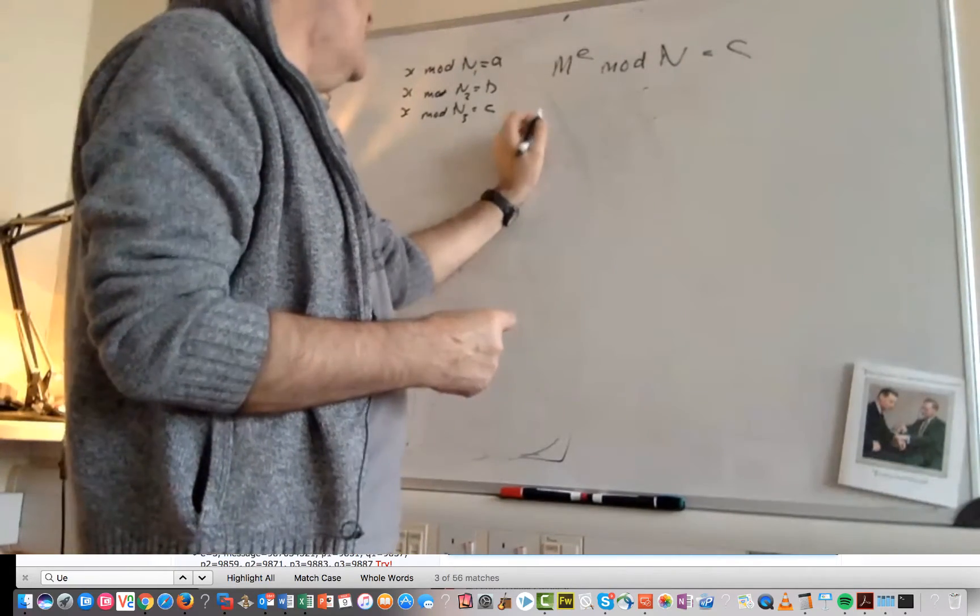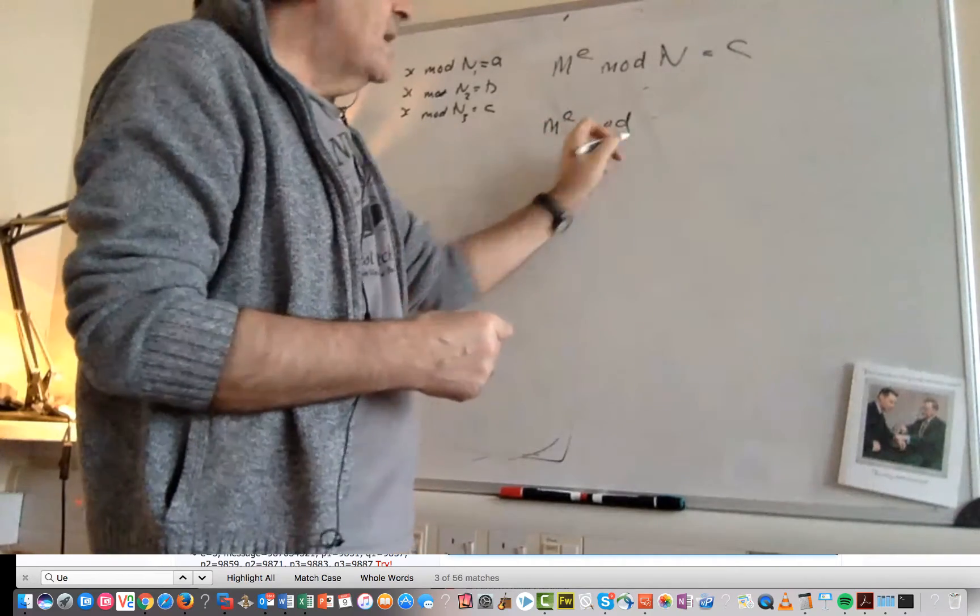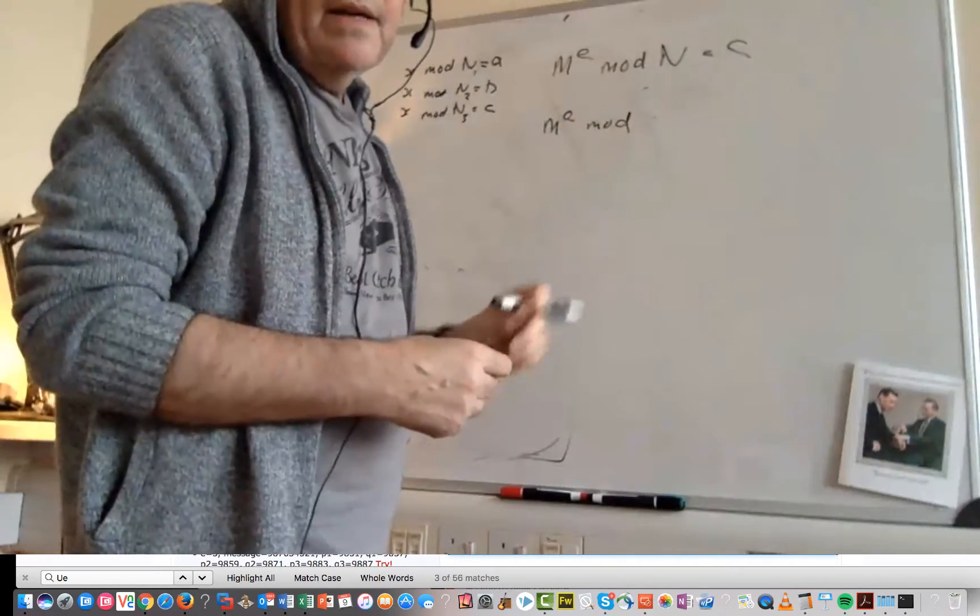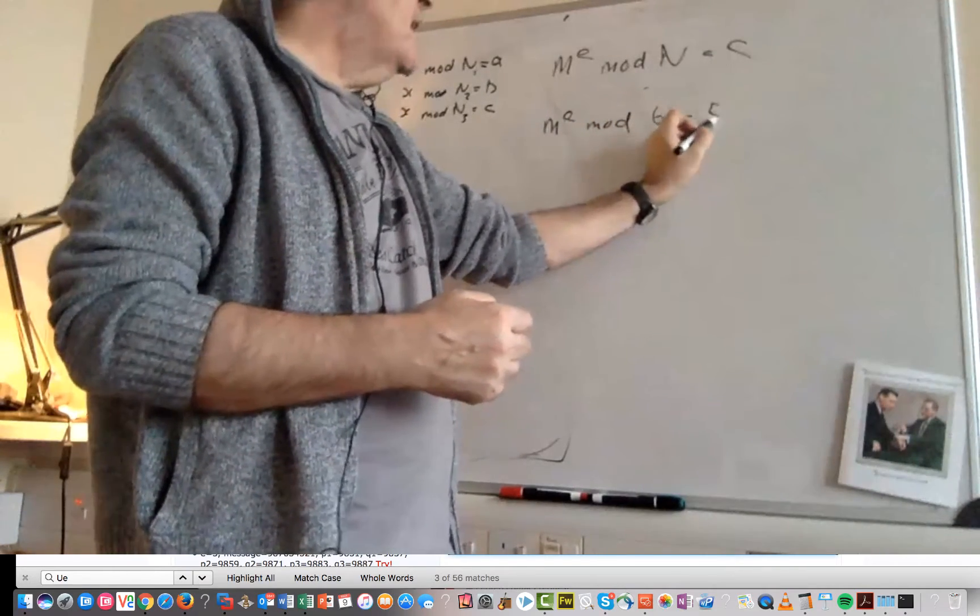So if we take an example and we have M to the power of E and we have an N value of 6 and then that is equal to 5.